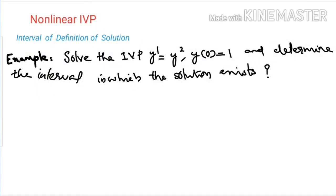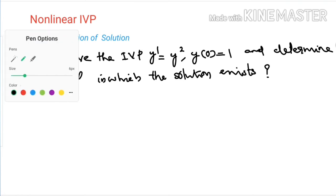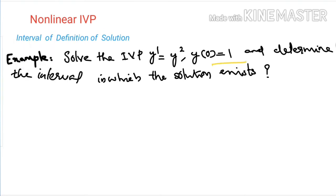In this lecture we will continue the discussion of the interval of definition of a solution for the non-linear IVP. Let's start with an example. Consider the problem: solve the IVP y' = y², y(0) = 1, and determine the interval in which the solution exists. This given equation is a non-linear differential equation of the form y' = f(t, y), where f(t, y) = y², with initial condition y(0) = 1.